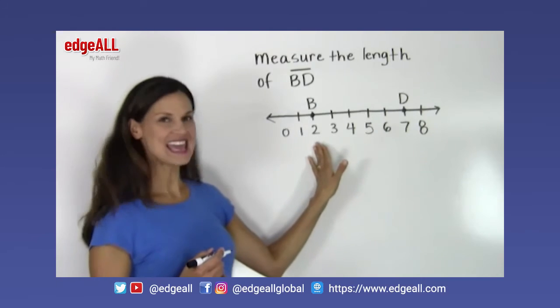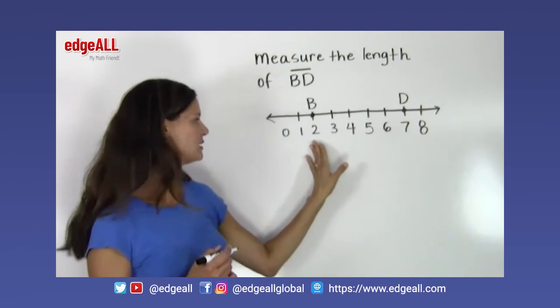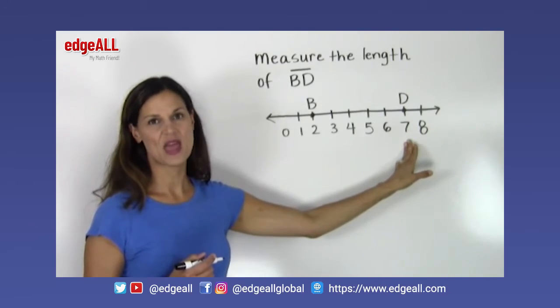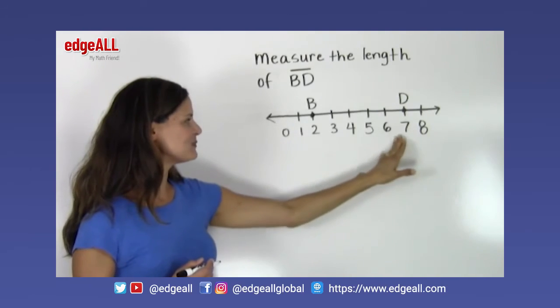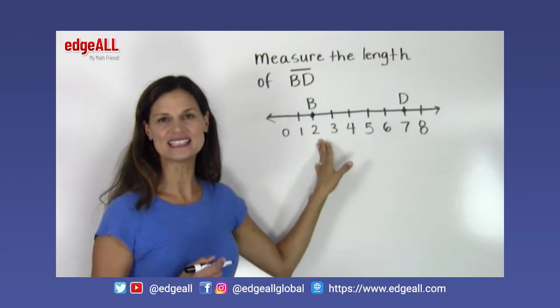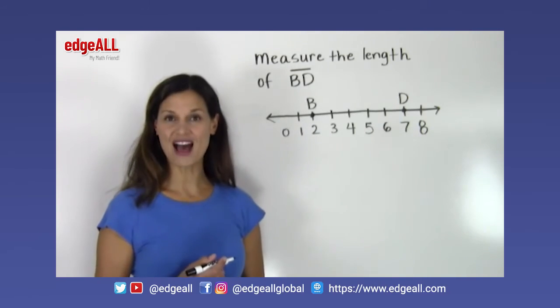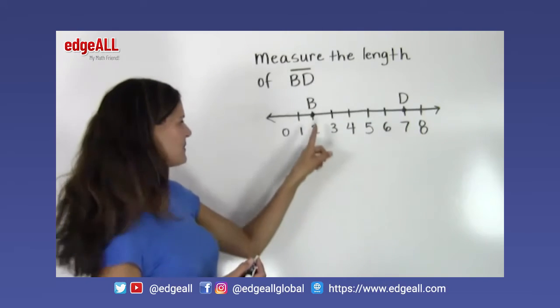So we have point B at 2 and point D at 7. So we can find the distance between these two points either by subtracting 7 minus 2 equals 5 or counting the spaces.